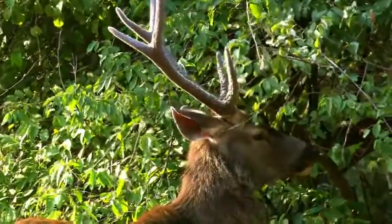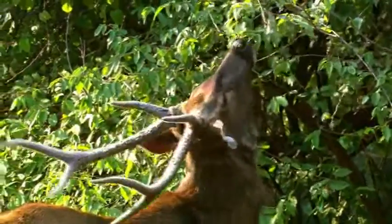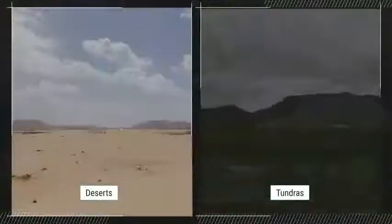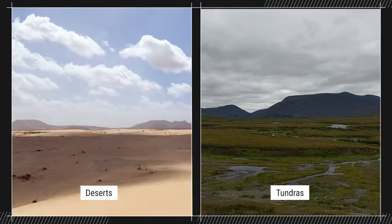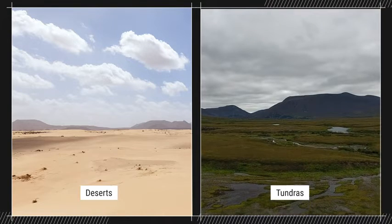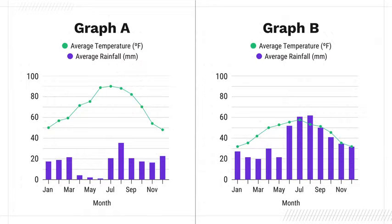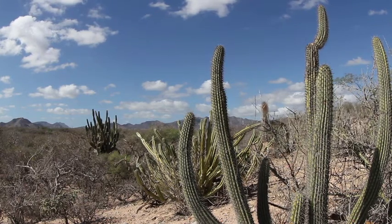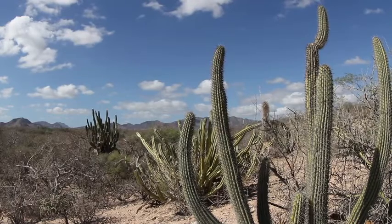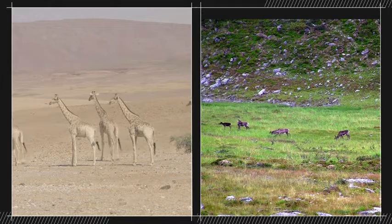Different types of plants are food for different animals, so the type of plants in an area determines the kinds of animal species that can live there too. This leads to some very diverse biomes, like rainforests with the most rainfall, or deserts and tundras with the least — both getting fewer than 250 millimeters or 10 inches of rain a year. But deserts have annual temperatures ranging from warm to very hot, where tundras can get well below freezing. Looking at a combined temperature and rainfall graph, graph A, with much warmer temperatures, most likely shows data from a desert biome, where specialized plants survive in hot, dry conditions.